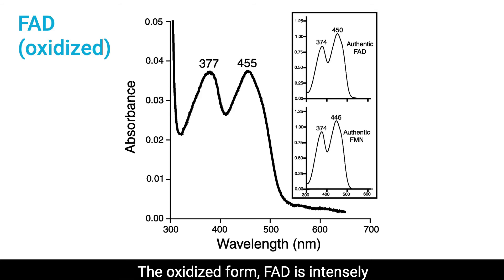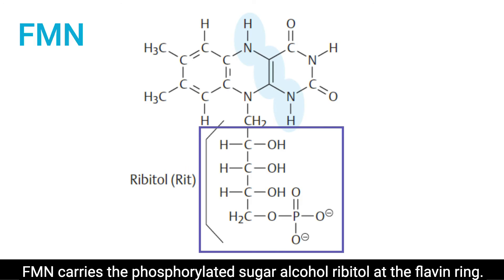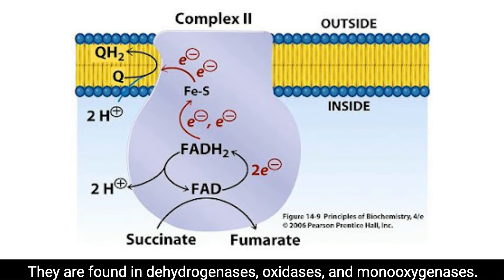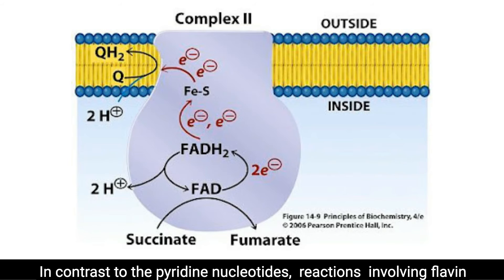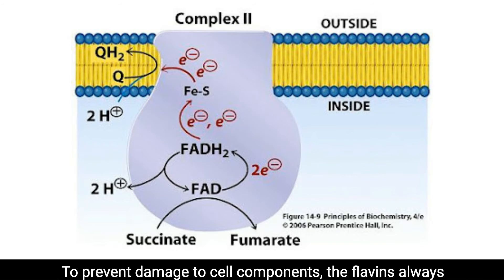The oxidized form, FAD, is intensely colored and absorbs maximally at 450 nanometers. However, the reduced form, FADH2, is colorless. FMN carries the phosphorylated sugar alcohol ribitol at the flavin ring. The two coenzymes are functionally similar. They are found in dehydrogenases, oxidases, and monooxygenases. In contrast to the pyridine nucleotides, reactions involving flavin coenzymes give rise to radical intermediates like oxygen superoxide to prevent damage to cell components.